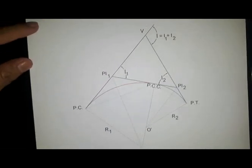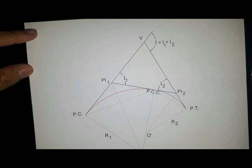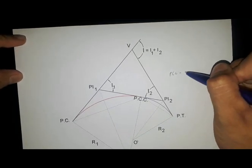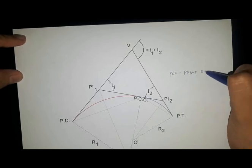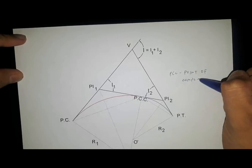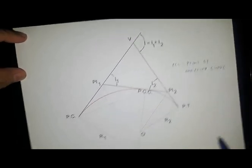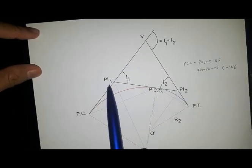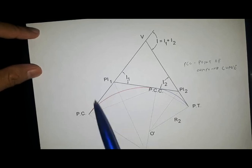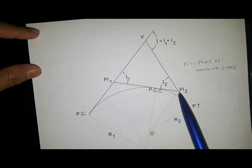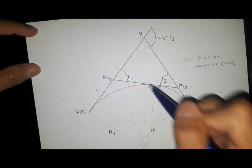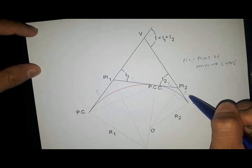All the elements are the same as compared to the simple curve, except for a new element — the PCC, or Point of Compound Curve. Notice that we have a common tangent, which is the tangent that connects the point of intersection for the first curve and the point of intersection for the second curve. This is the tangent for the first curve, and these are the tangents for the second curve.